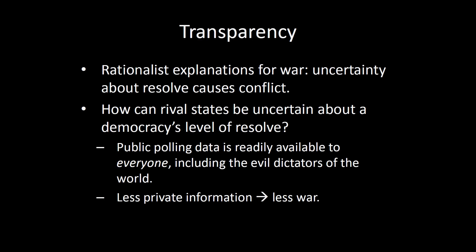So suppose you believe that uncertainty about resolve causes conflict. It's going to be a little bit more difficult for a state to be uncertain about a democracy's level of resolve. Why? If you are wondering what people in a democracy are thinking, you just look at public polling data — it's readily available to everyone, including the evil dictators of the world. So if I am your antagonist and you're living in a democracy, I don't have this problem with uncertainty, because I can look at the latest polling data online and know how resolved you are. I'm going to make an offer tailored accordingly, and that offer is not going to result in conflict because I know what offer to make to get you to accept. Less private information leads to less war. That's how transparency resolves conflict between two democracies.